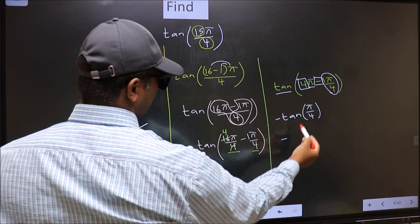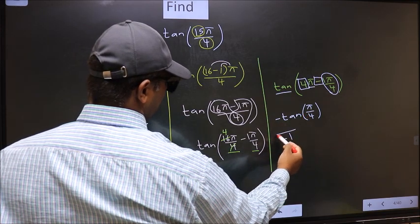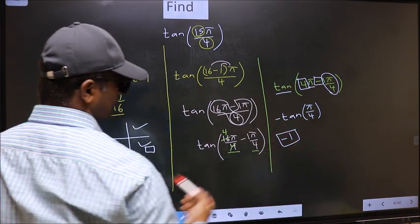So negative tan(π/4) equals negative 1. This is our answer.